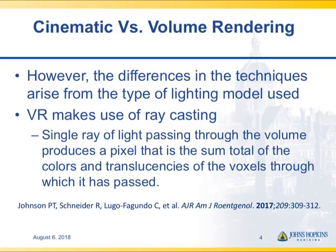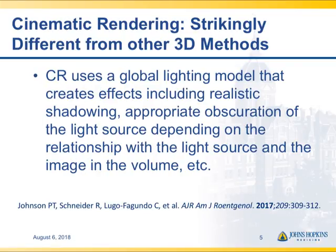The differences in the technique arise from the lighting models used. Volume rendering makes use of ray casting, which was very innovative when first done at Pixar in the mid-80s — a single ray of light passing through the volume produces a pixel that is a sum total of the colors and translucencies of the voxels through which it has passed. Cinematic rendering uses more of a global lighting model that creates effects including realistic shadowing and appropriate obscuration of the light source depending on its relationship with the image and the volume.